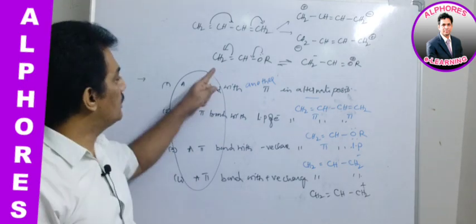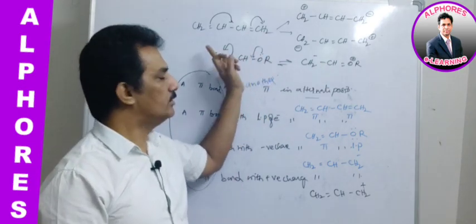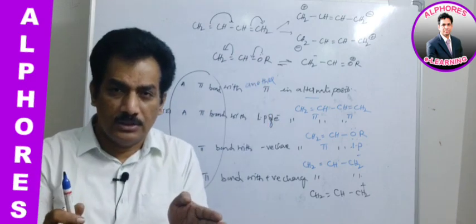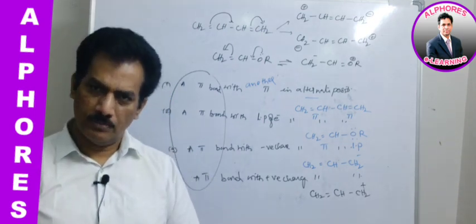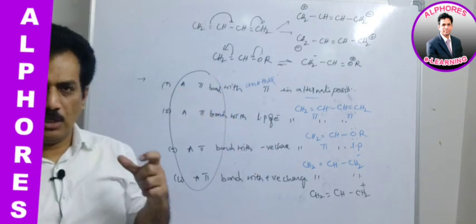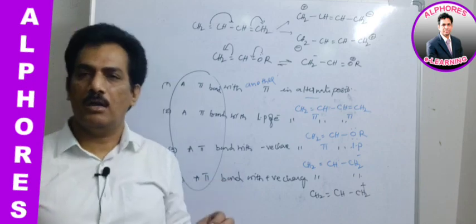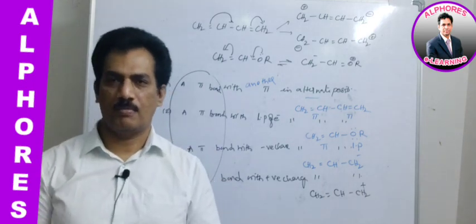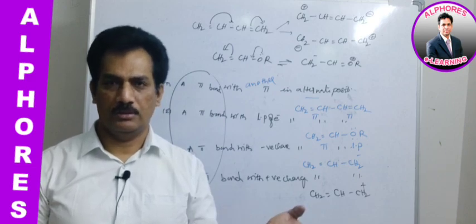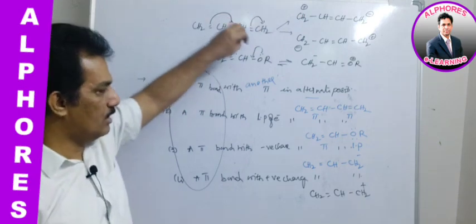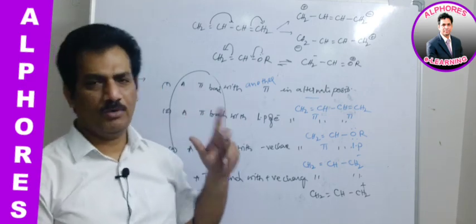These different structural formulae that can be written for a molecular formula are known as conjugative structures, contributing structures, canonical forms, or resonating structures. All these names refer to different imaginary structures for the given conjugative system. They are all imaginary representations.